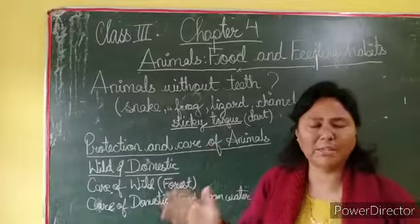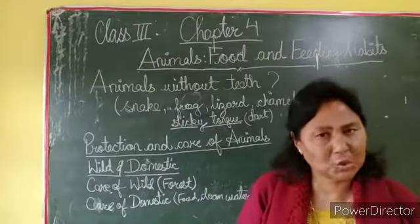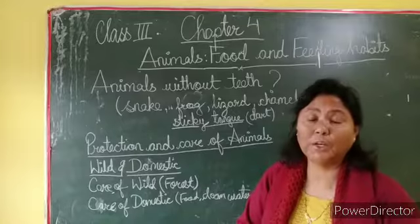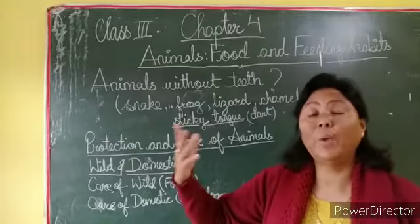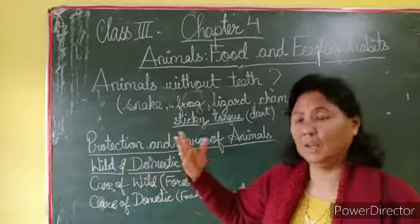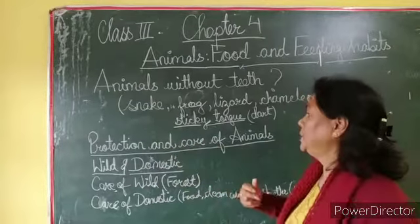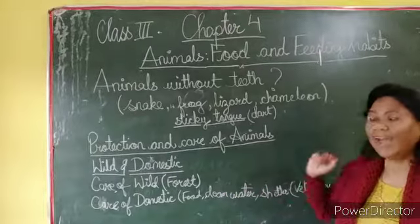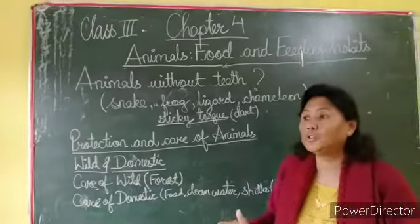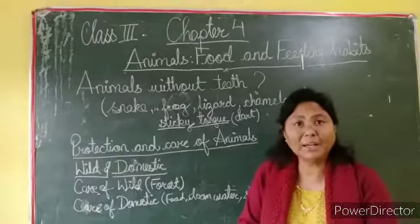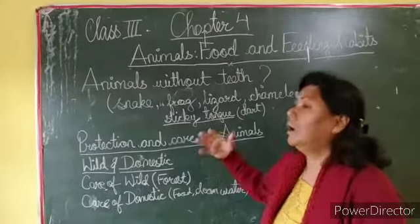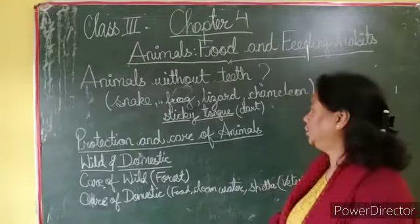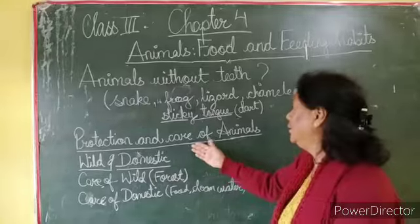Since you are in class 3, you have covered this in detail, and in class 4, 5, and 6 you will study it further. Now, protection and care of animals. We protect ourselves, and in the same way, animals also need protection and care. We have two kinds of animals: wild animals and domestic animals.